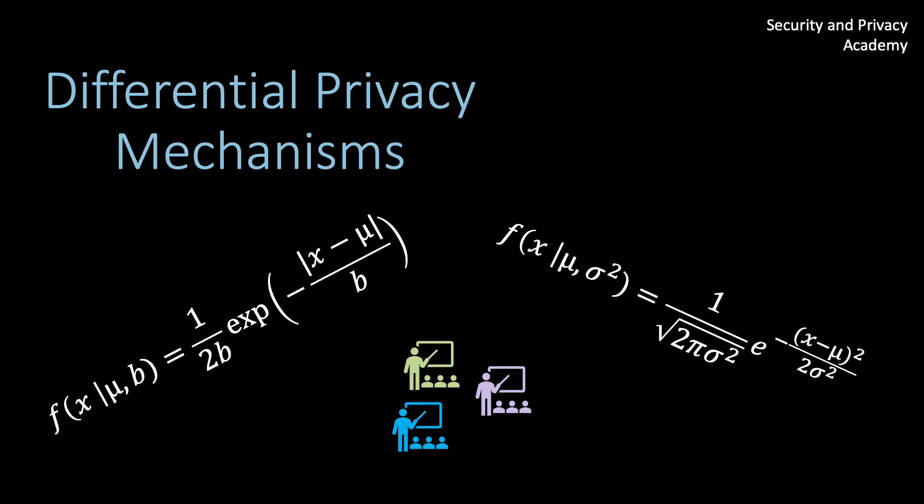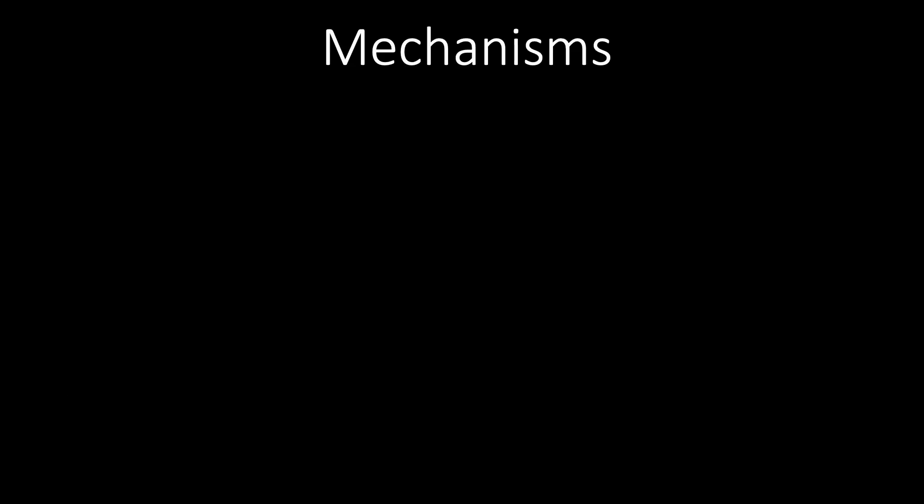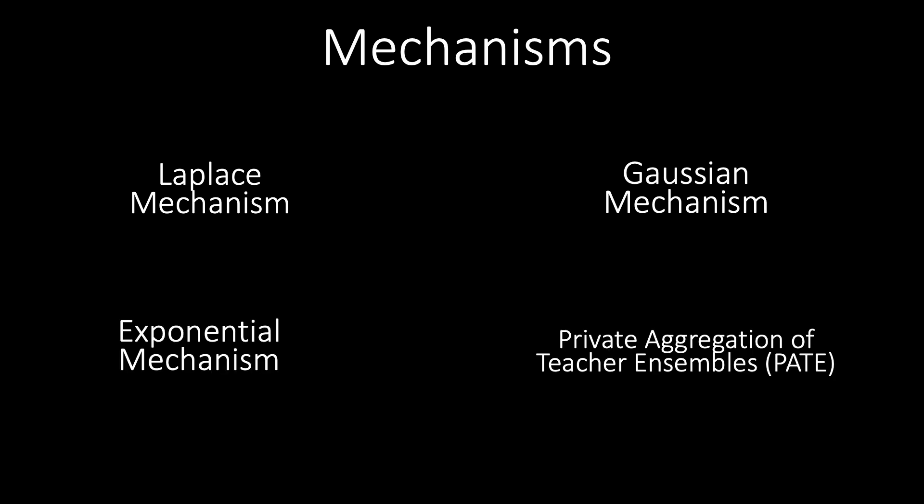Differential privacy mechanisms are tools in preserving privacy while enabling valuable data analysis. This video provides a technical examination of four key mechanisms: The Laplace mechanism, the Gaussian mechanism, exponential mechanism, and private aggregation of teacher ensembles, or simply PATE.